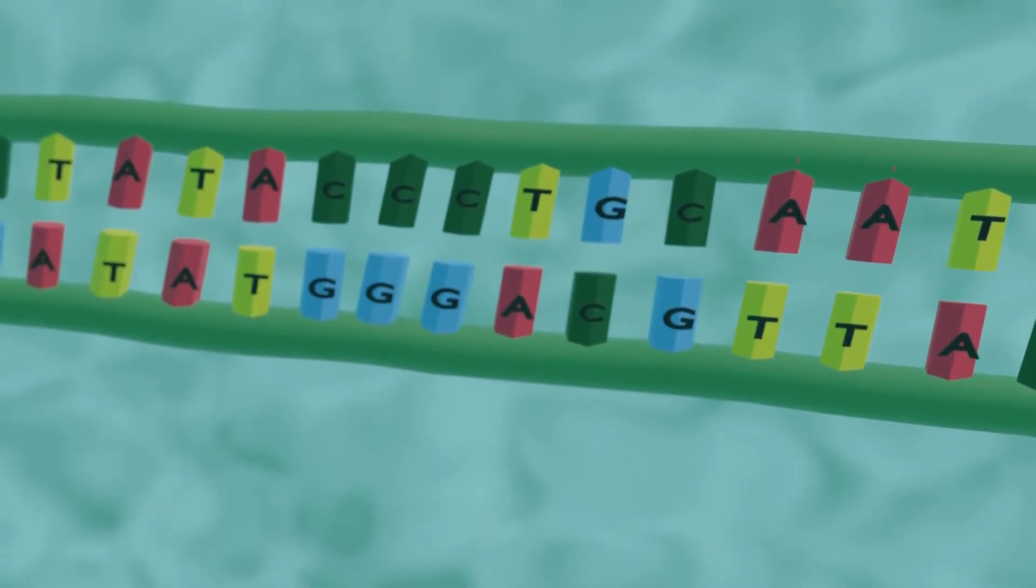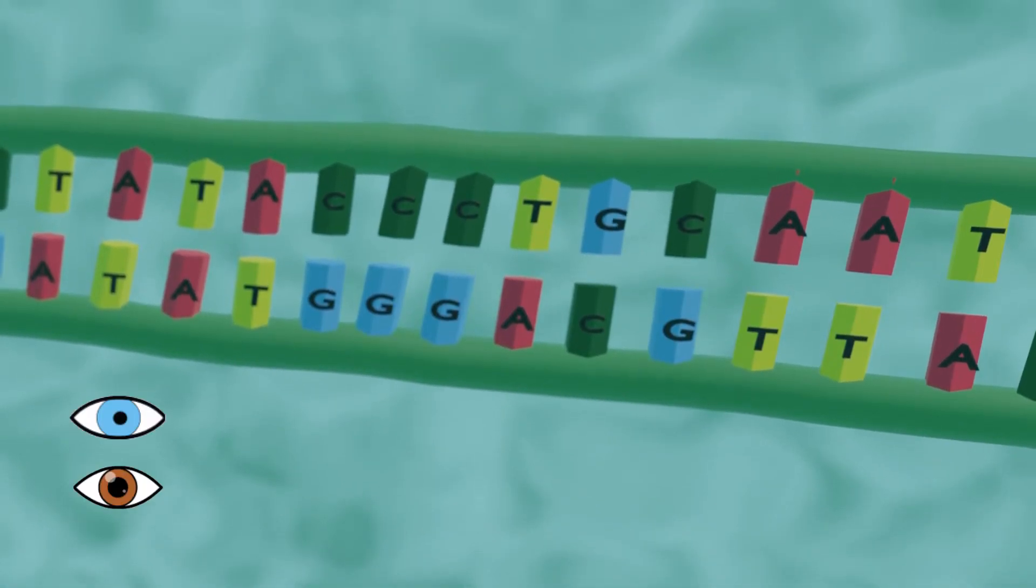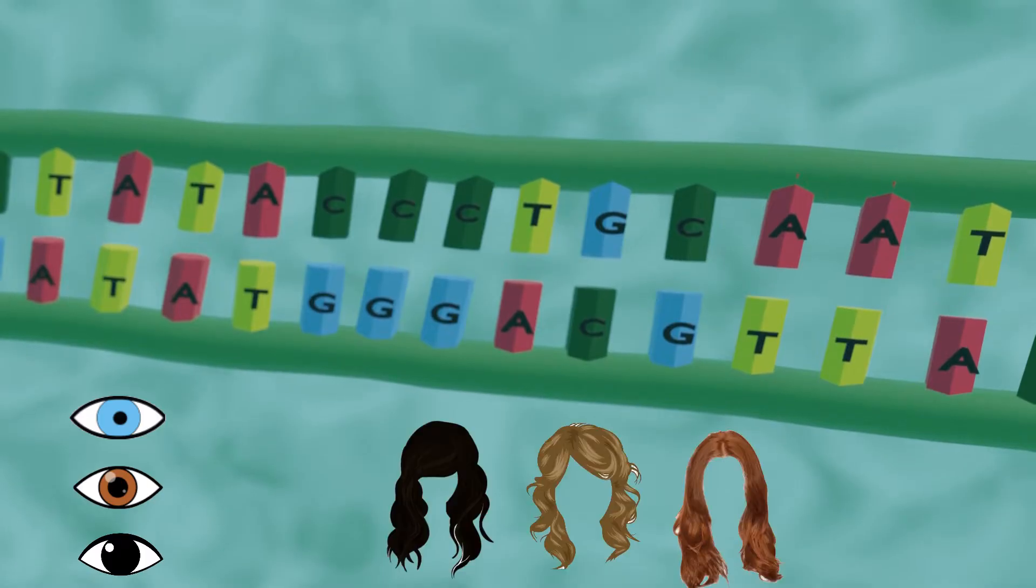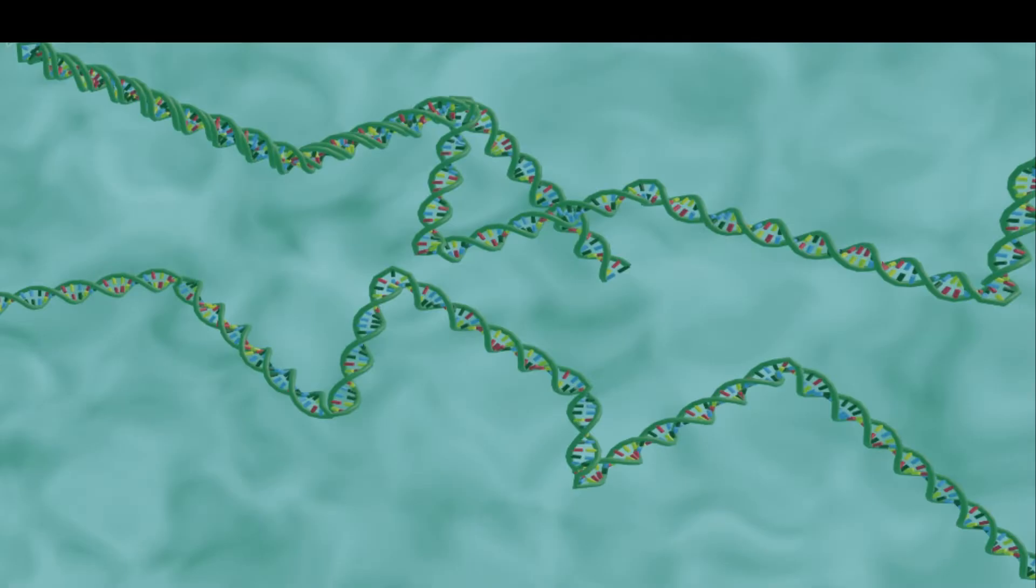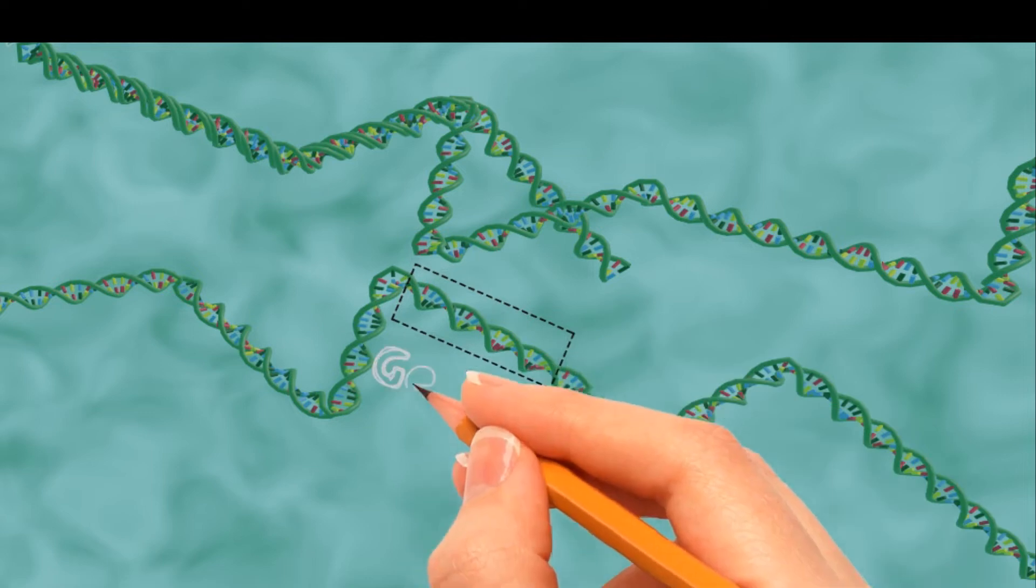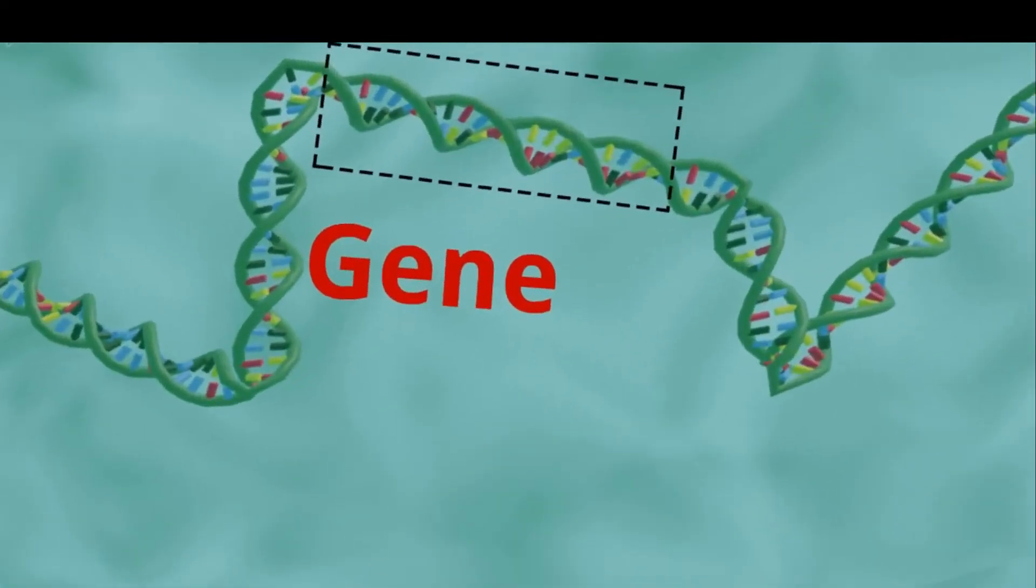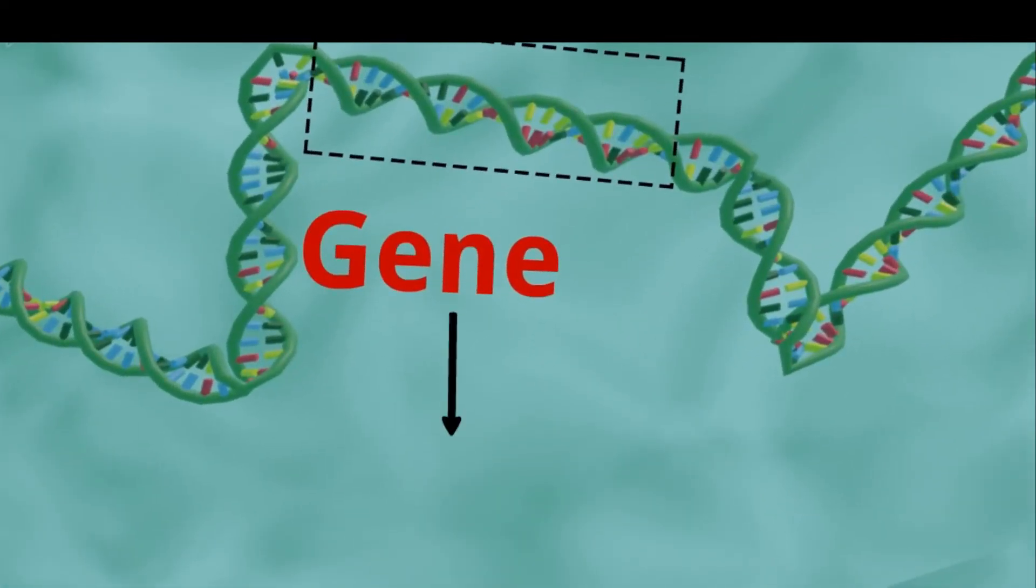DNA is divided into functional units called genes. Each gene provides instructions for a functional product called a protein. For example, the eye color gene provides instructions for a protein that helps make colored pigment in the eye.